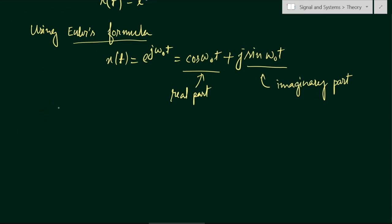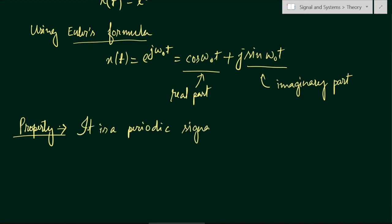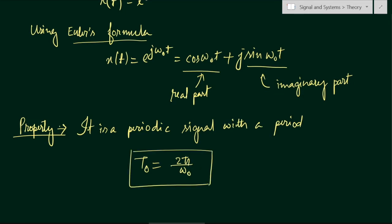The property of this complex exponential signal is that it is a periodic signal with period T₀ = 2π/ω₀. This is the period T₀.